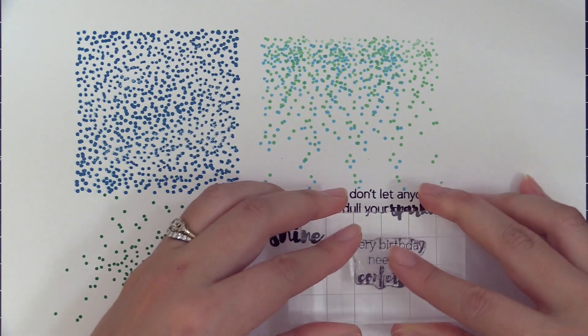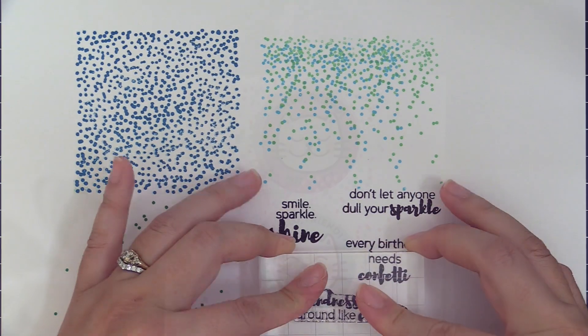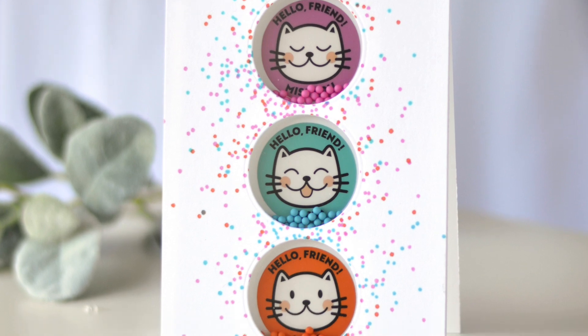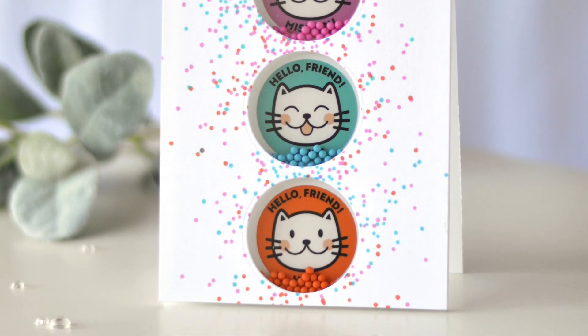You can create backgrounds, focal images, and more. For a more realistic look, stamp and layer it with metallic embossing powders for sparkling effects.